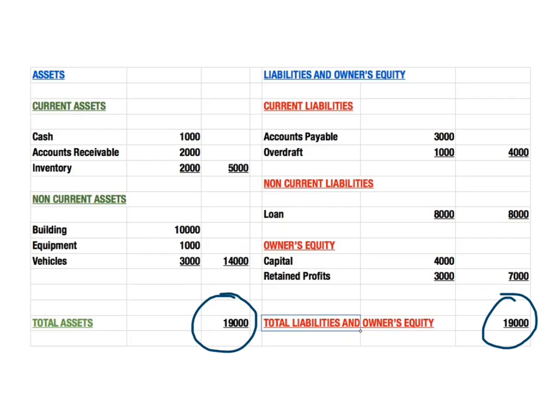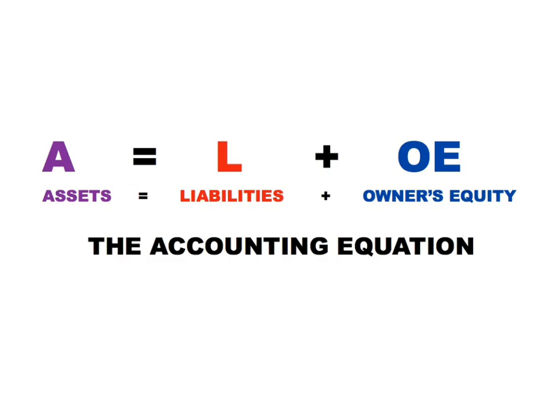For the balance sheet to be in balance, this side — assets — needs to equal this side — liabilities and owner's equity. This is represented in what we call the accounting equation, where assets equal liabilities plus owner's equity.